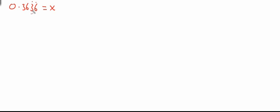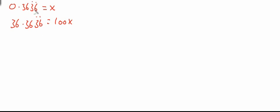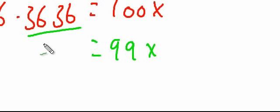This is so that we get those two digits in front of the decimal point. If we multiply by 100 we get 36.3636 recurring, which equals 100x. If 100x equals 36.3636 and x equals 0.3636, then subtracting x from 100x gives 99x. Because the recurring parts are identical, they cancel out and we're left with just 36.